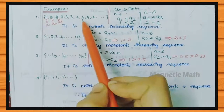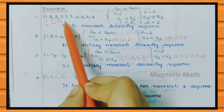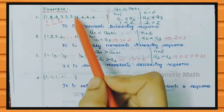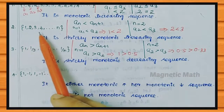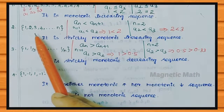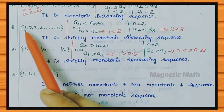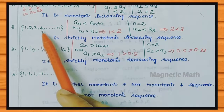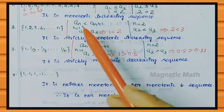The path shows: second term greater than or equal to first term, third term greater than or equal to second term. Since there is an equality case (2=2), it is not strictly increasing. Example 2: sequence 1, 2, 3, 4, ... For n=1: A1=1, A2=2, and 1 < 2. For n=2: A2=2, A3=3, and 2 < 3. Each term is strictly less than the next, so this is a Strictly Increasing Sequence.